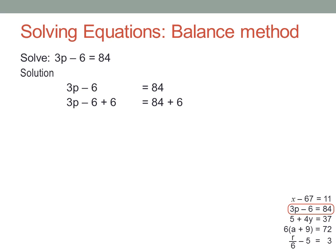First, undo the minus 6 by adding 6 to both sides. Keep it balanced by doing the same thing on both sides. That leaves me with 3p on the left, and 84 plus 6, which is 90, on the right.